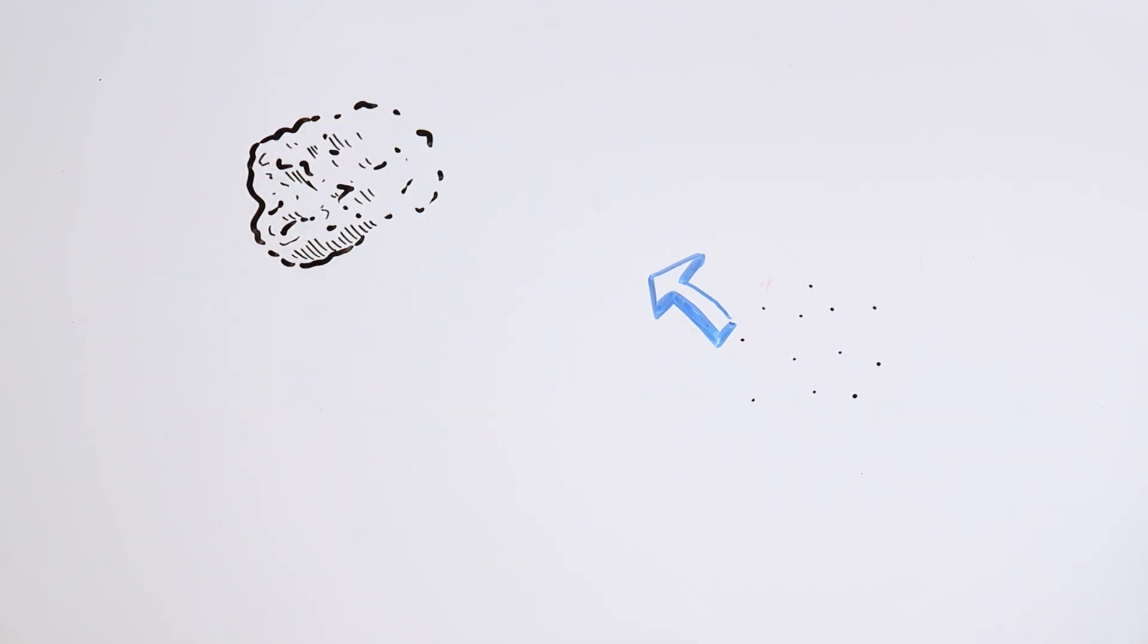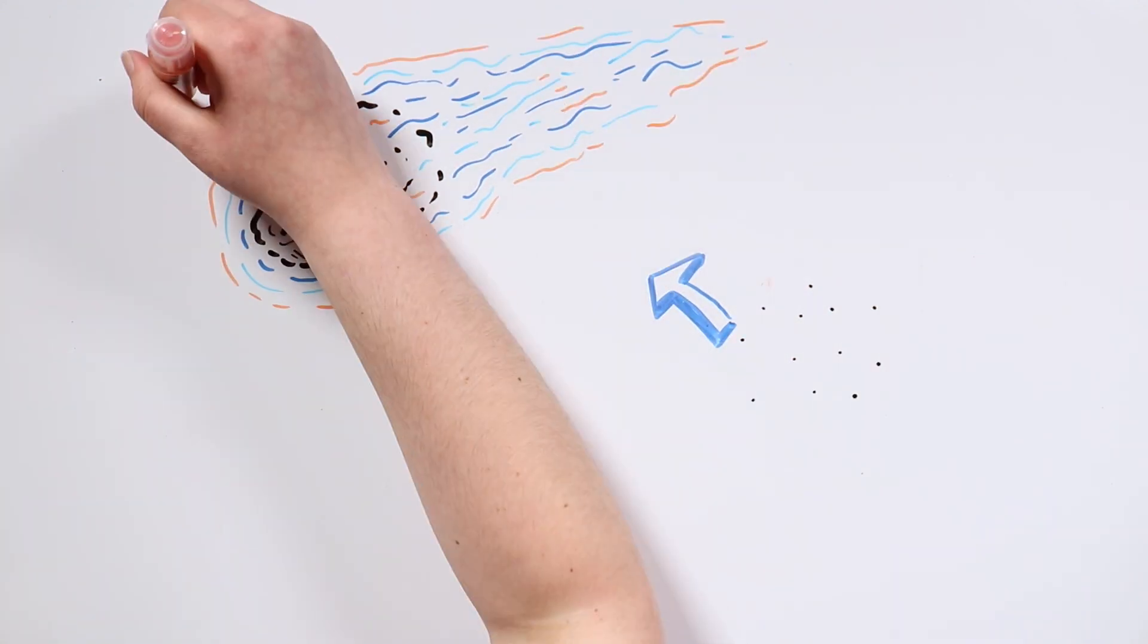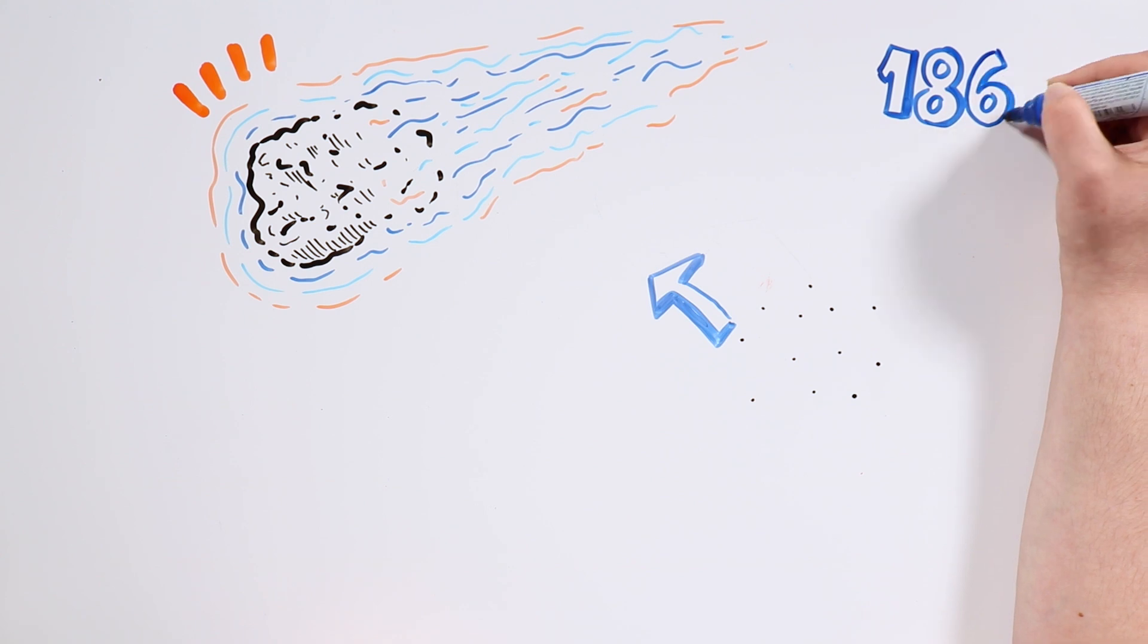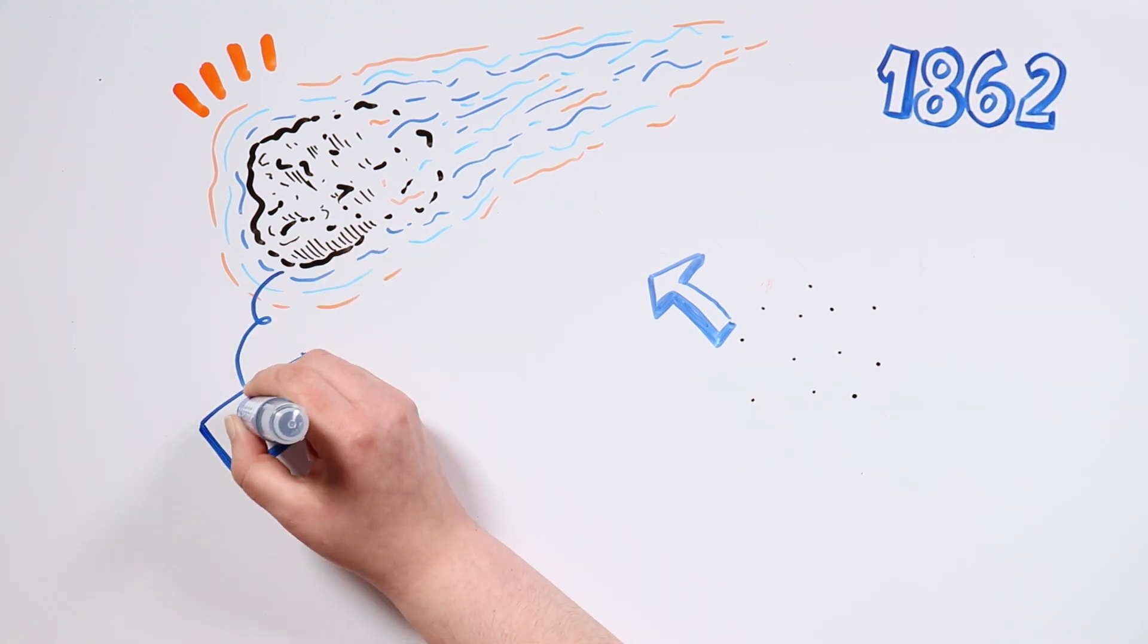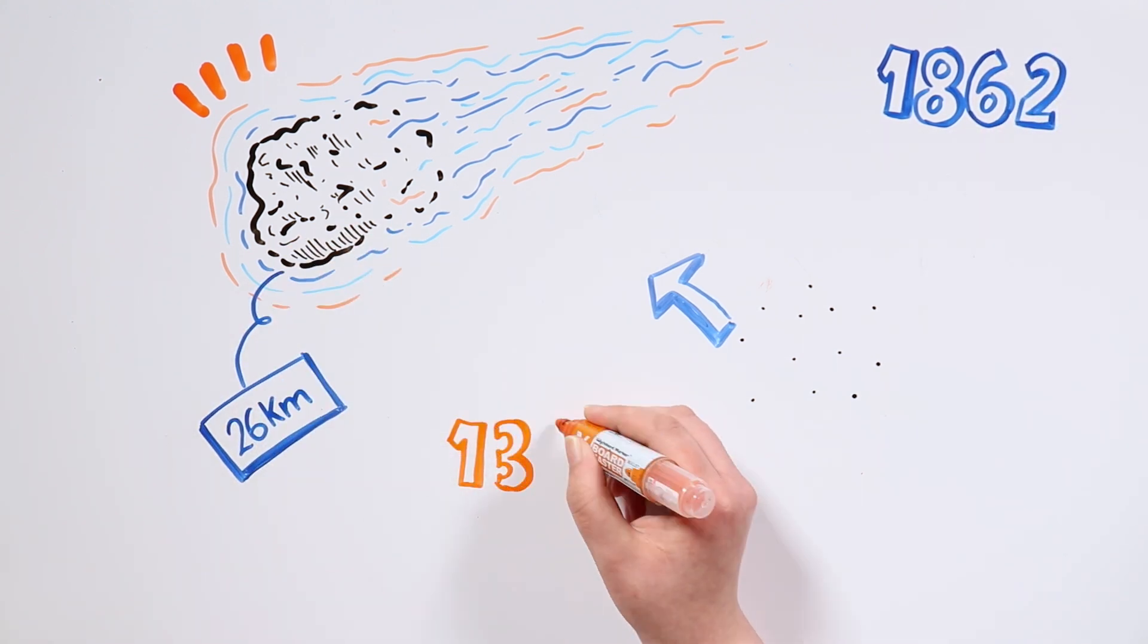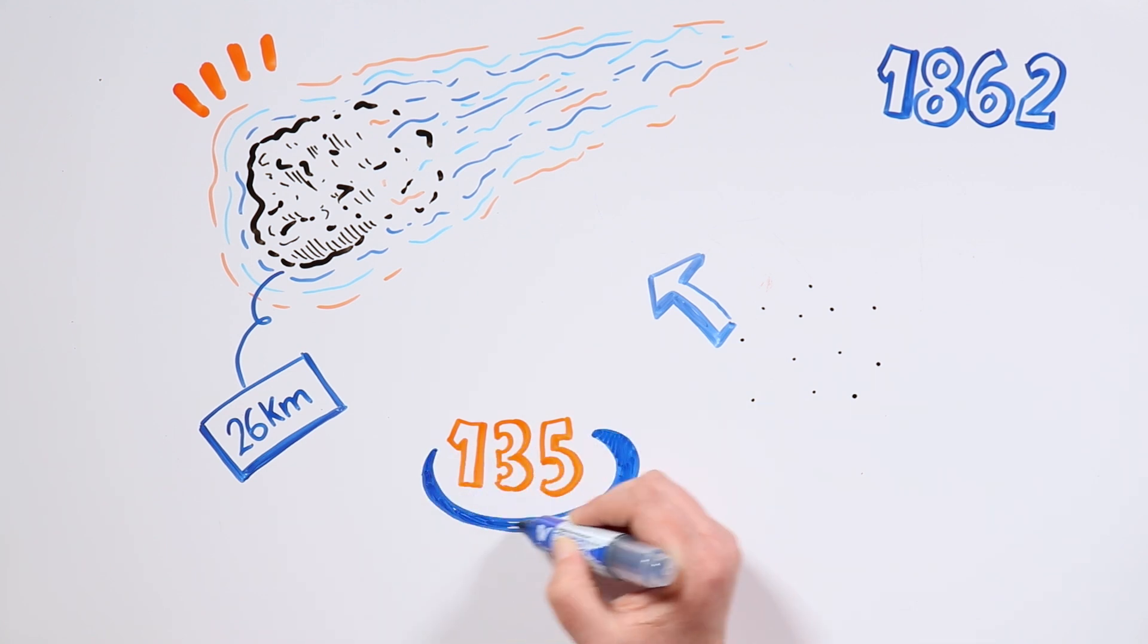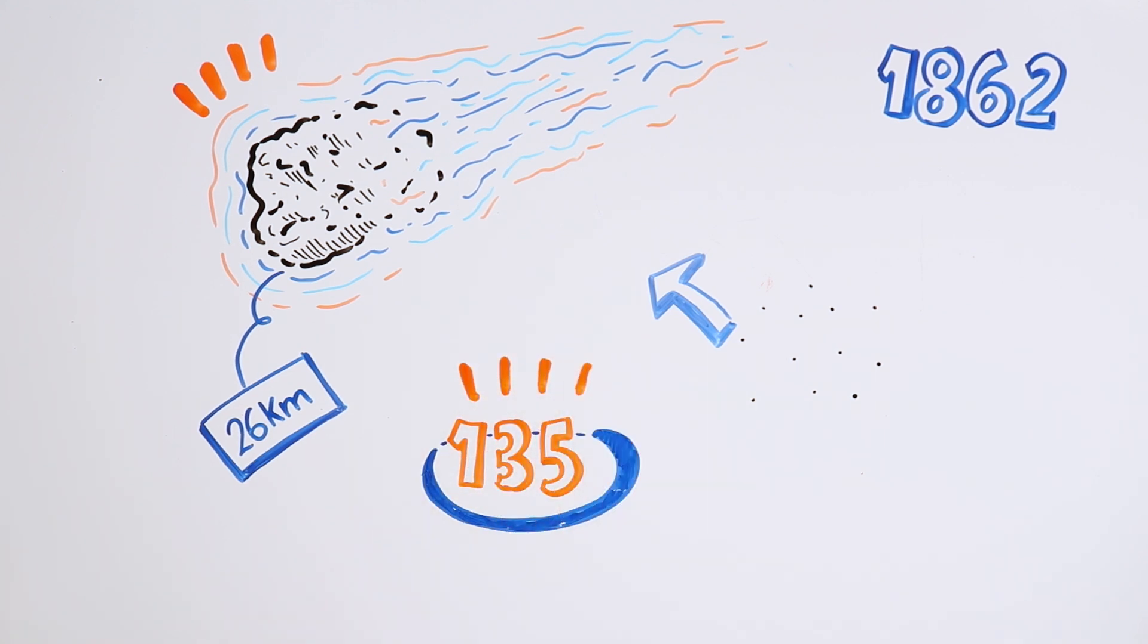These particles are the debris that the Swift-Tuttle comet leaves after traveling around the sun. It was discovered in 1862, has a diameter of 26 kilometers, and it orbits around the sun for periods of 135 years.